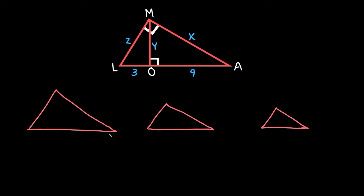Now that we have our three triangles, let's label them. The big one is LMA. We can see that the right angle is up on top. Now let's get the lengths: the distance from L to M is Z, from M to A is X, and on the bottom the whole base is 3 plus 9, which is 12. So this whole length is 12.